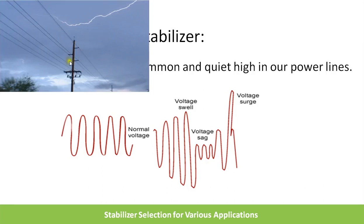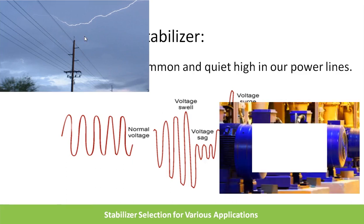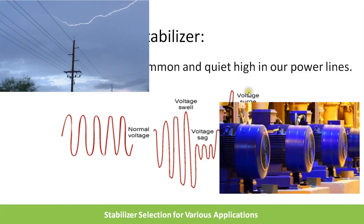The reasons for voltage fluctuations are many. Lightning is one reason for high voltage. Also, whenever you switch on high power loads, there is a dip in the voltage. There are many other reasons for voltage fluctuations as well.